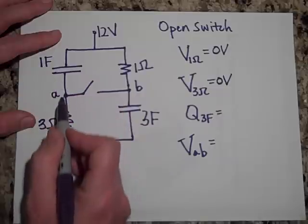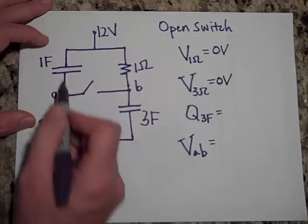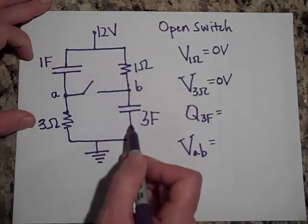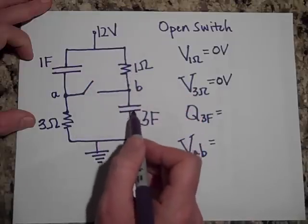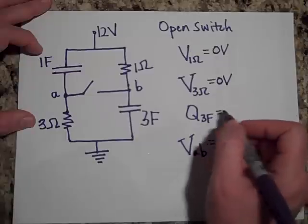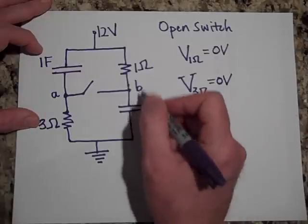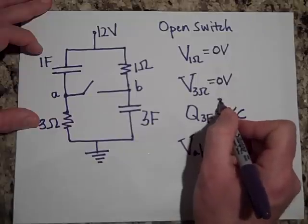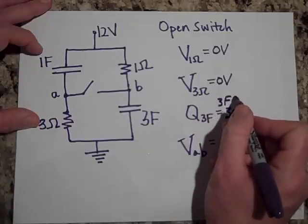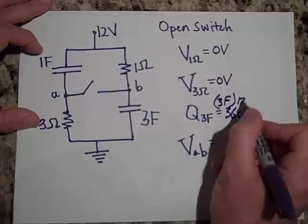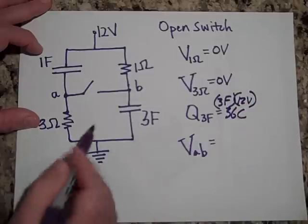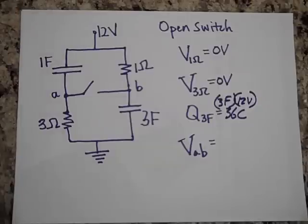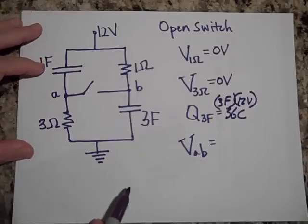Now, that means that we've got to drop that voltage somehow to get to ground, so I must be dropping 12 volts across here. And I must be dropping 12 volts across here. If I'm dropping 12 volts across here, Q is C times V, so 3 times 12 is 36 coulombs, because it's C, 3 farads, times 12 volts. And I know I'm dropping 12 volts, because I have nowhere else to drop it to get to ground.